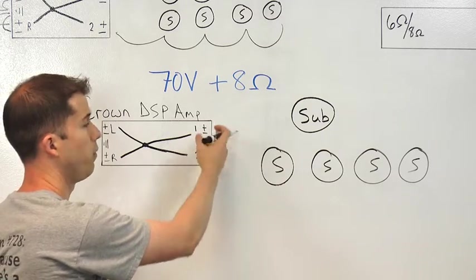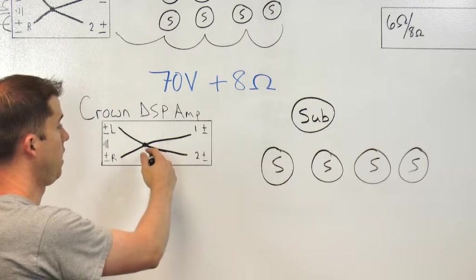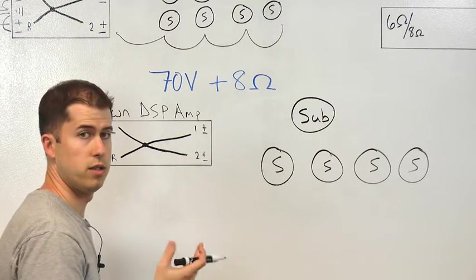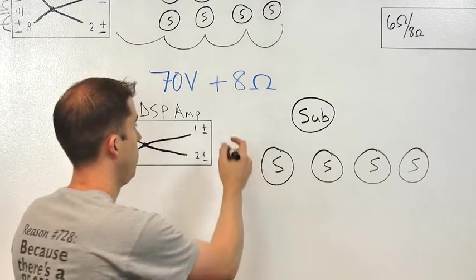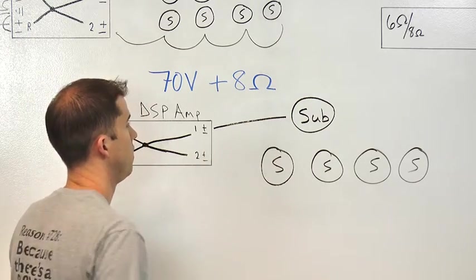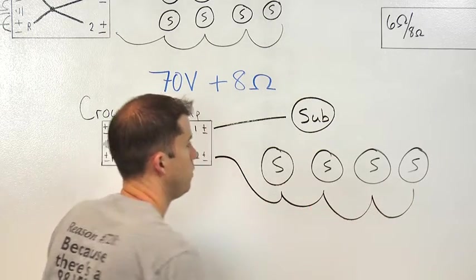And then it would send the mids and highs to channel 2 which is our 70-volt channel to feed all of our satellite speakers. To wire it, simply directly connect channel 1 to the sub. And then for channel 2, use standard 70-volt wiring practice to daisy chain the landscape speakers.